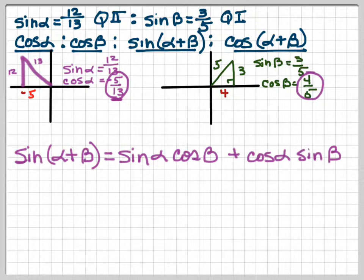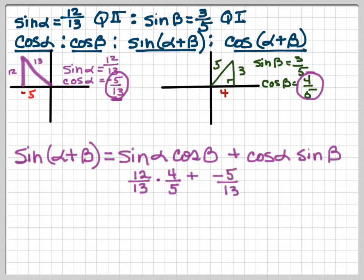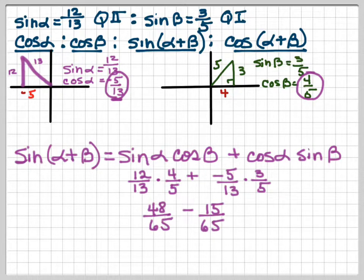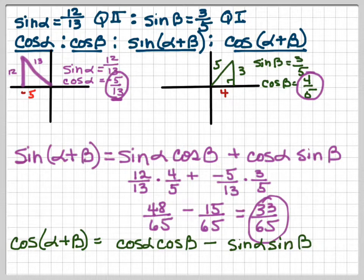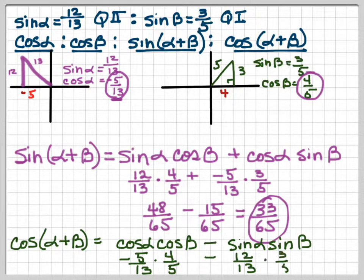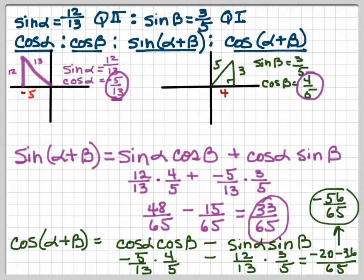So sine of (α+β) will be sine alpha cosine beta plus cosine alpha sine beta. Plugging in: sine alpha is 12/13, cosine beta is 4/5, plus cosine alpha is −5/13, sine beta is 3/5. Multiplying out, we get 48/65 minus 15/65, which gives us 33/65. Then cosine of (α+β) is cosine alpha cosine beta minus sine alpha sine beta. Cosine alpha is −5/13, cosine beta is 4/5, minus sine alpha 12/13 times sine beta 3/5, which gives −20/65 minus 36/65, or −56/65.